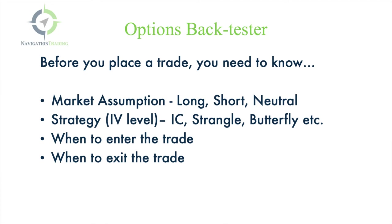Before you place a trade, there are a few things you need to figure out. First, what's your market assumption — are you long biased, short biased, or neutral? What's your strategy — are you trading an iron condor, strangle, butterfly, etc.? A lot of that depends on where the implied volatility level is. Then you need to figure out when you're going to enter the trade and when you're going to exit the trade. Let's go to the back tester and take a look at some examples.